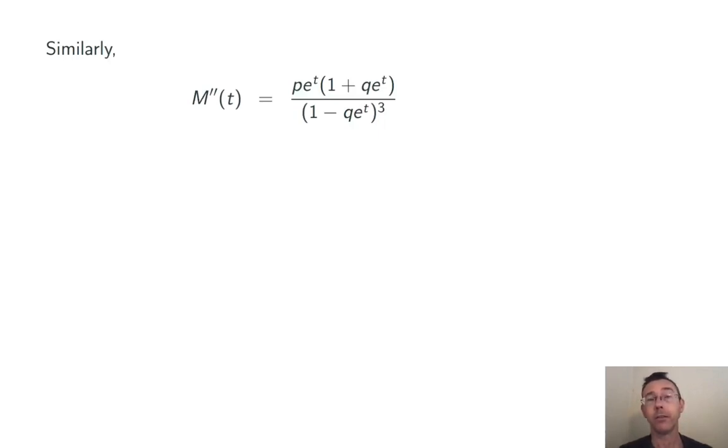Now let's compute the variance. Let's get the expected value of x squared by taking the second derivative of the moment generating function. Here it is, done again just using the quotient rule and some algebraic simplification. And then plugging in 0. So when we do that, plugging in 0, we get p times (1 plus q) over (1 minus q) quantity cubed. Using the fact that q is 1 minus p, this can be simplified a little bit. We get (1 plus q) over p squared.